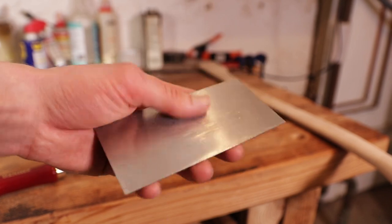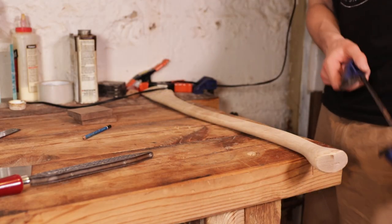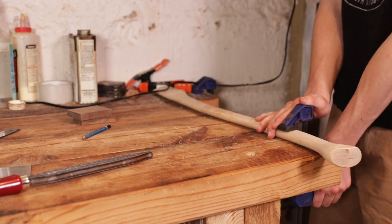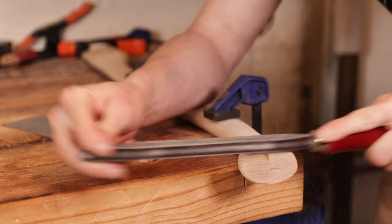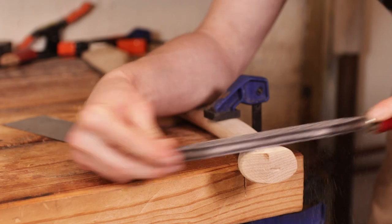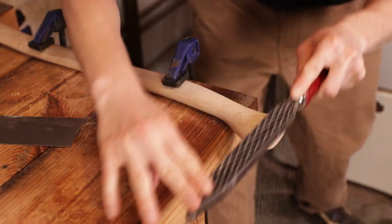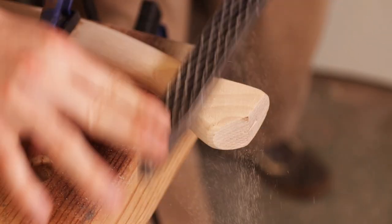Now it is time to flatten both sides of the axe handle. I use a shinto rasp and a card scraper to do this. You can actually skip this step if you're making your own axe handle from a board because it's already flat on both sides. But since I'm using a store-bought axe handle, it already has a palm swell so I need to completely remove that.